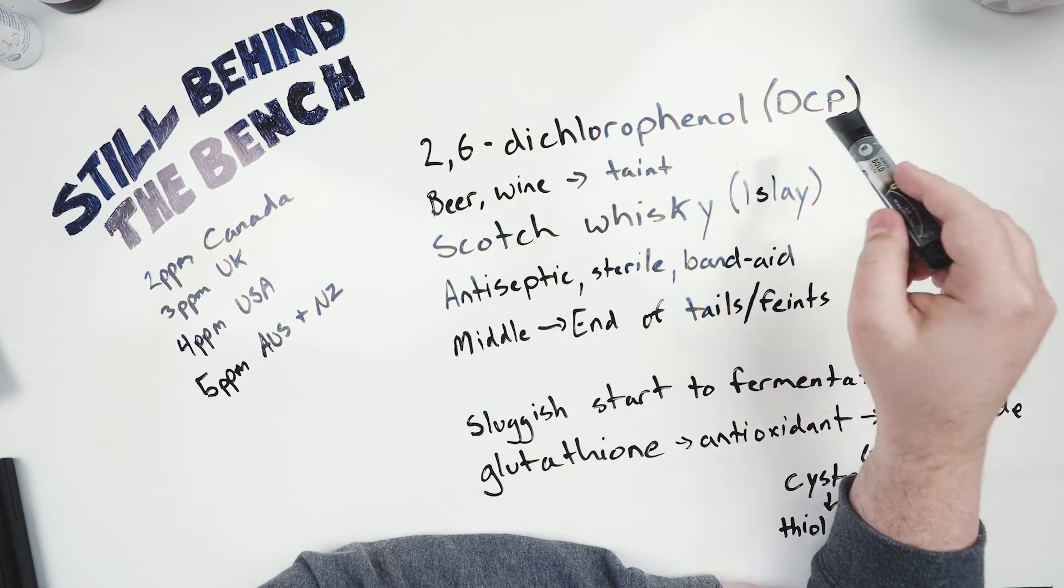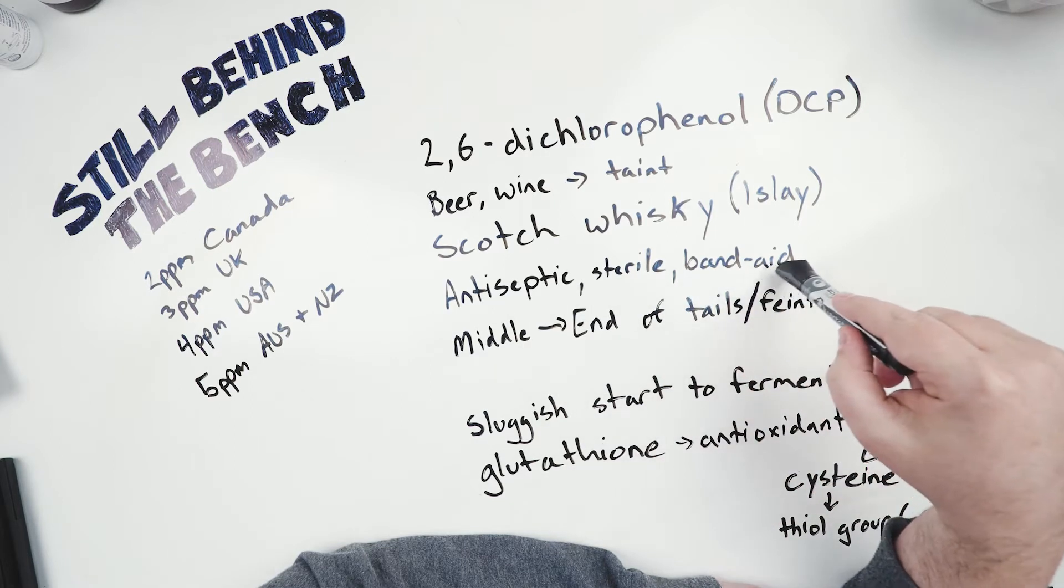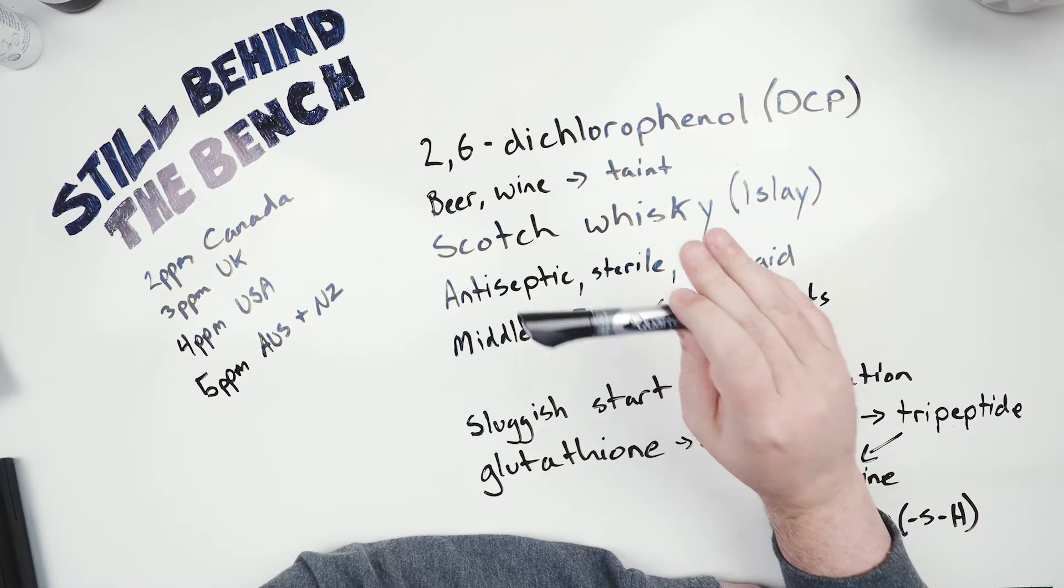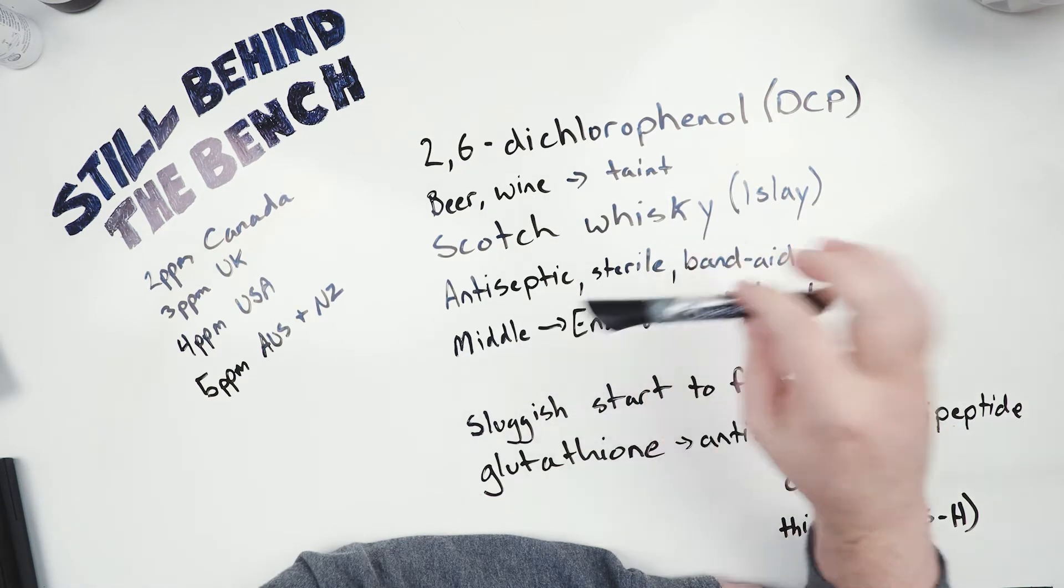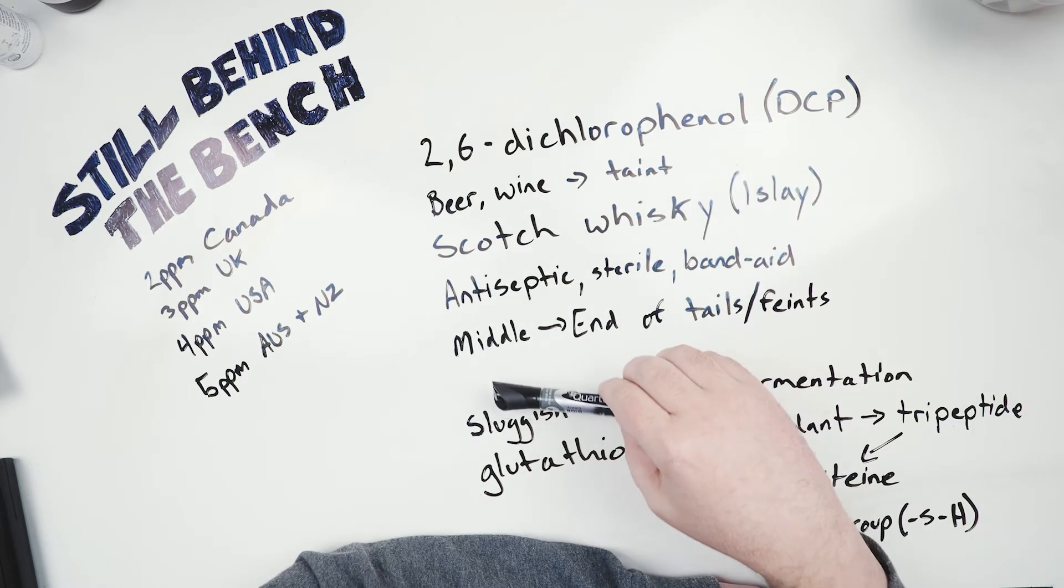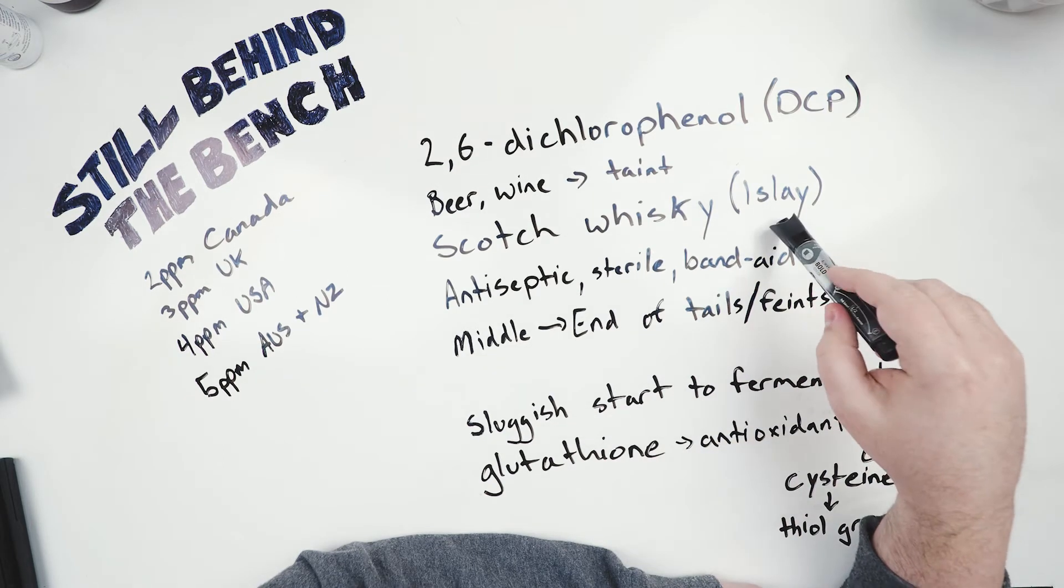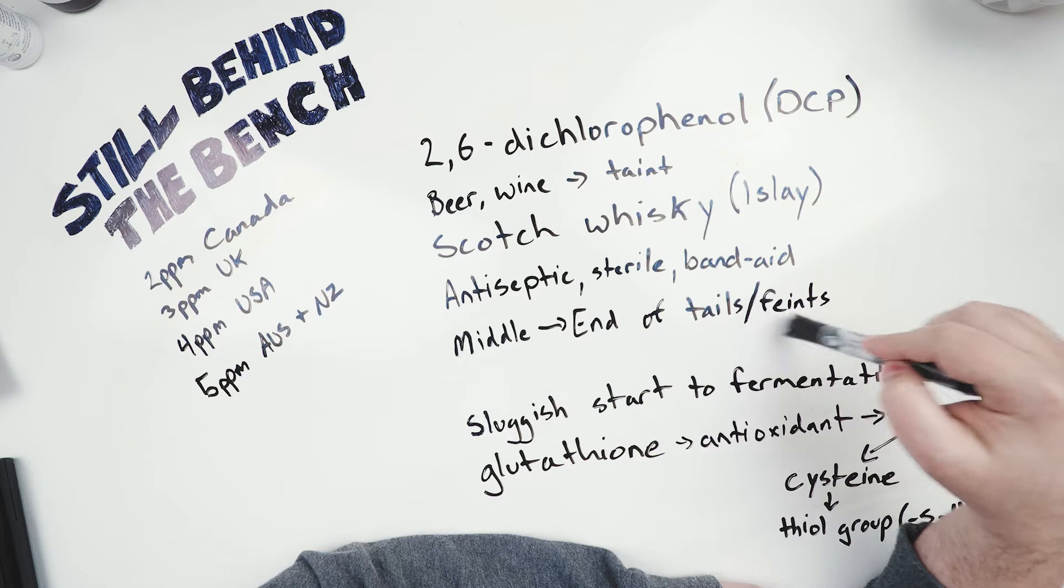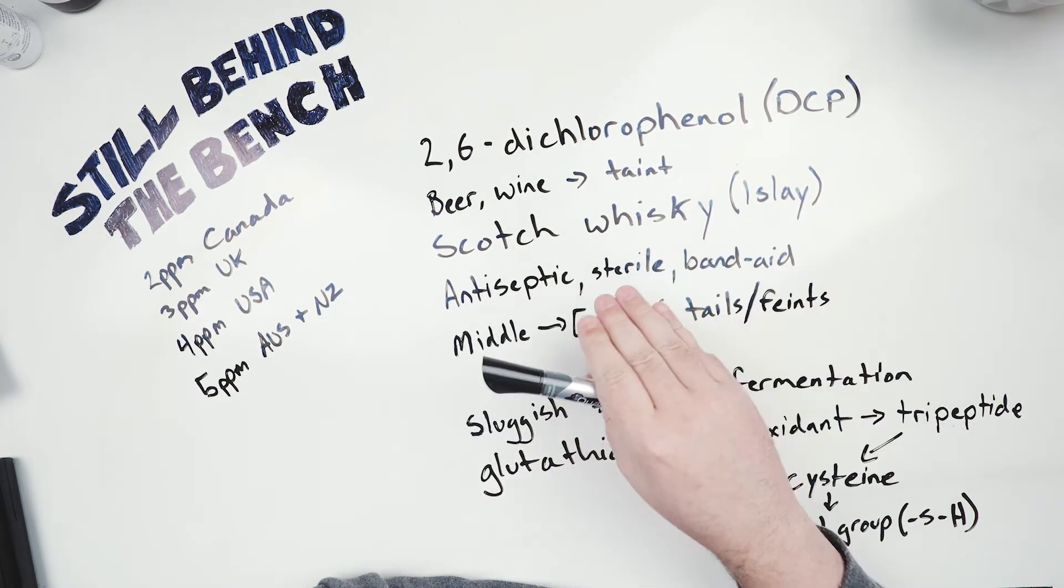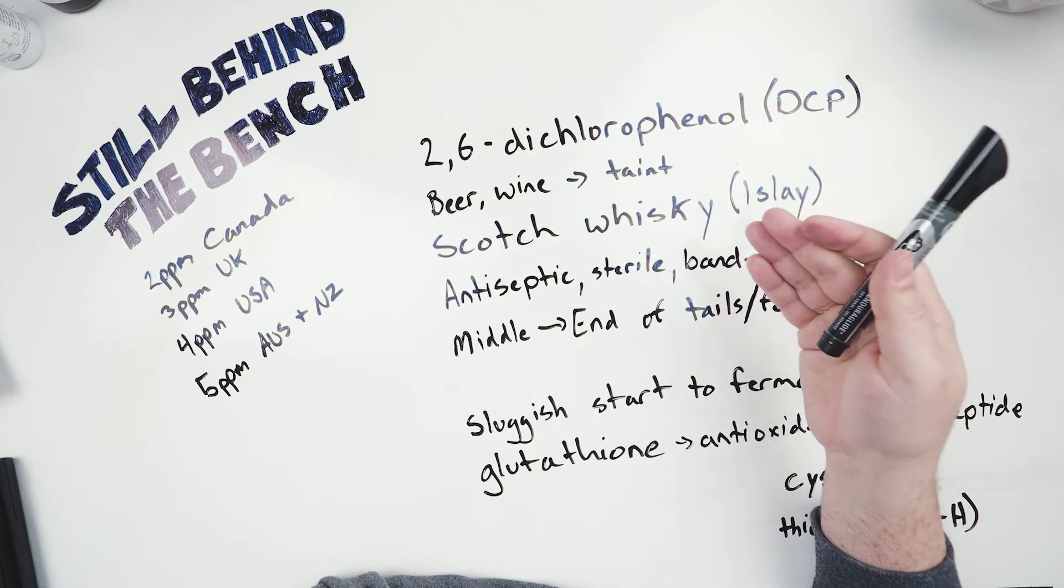Specifically this DCP compound has a sort of antiseptic sterile maybe even a band-aid flavor smell and taste and in my opinion most spirits do not benefit from this flavor but sometimes these scotch whiskeys can pull it off. Luckily for us it comes out usually in the middle to the end of the tails or feints and Islay when they're distilling they refer to the tails as feints instead of tails. So you know if you get this flavor and you weren't using a peated malt then you will know the most likely culprit is that it came from sometime when you were adding water.